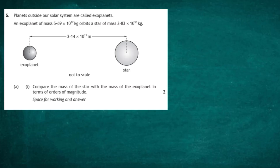Question 5 from Section 2 of the 2017 Higher Physics examination. Planets outside our solar system are called exoplanets. An exoplanet of mass 5.69 times 10 to the power 27 kilograms orbits a star of mass 3.83 times 10 to the power 30 kilograms. The distance between the centers of these objects is 3.14 times 10 to the power 11 meters, not drawn to scale.